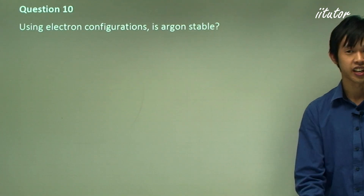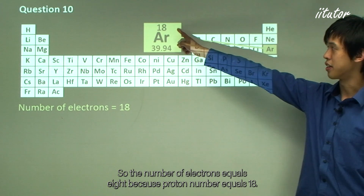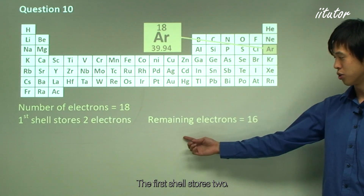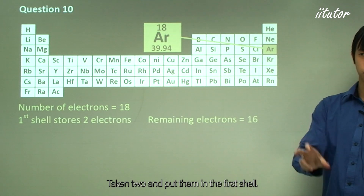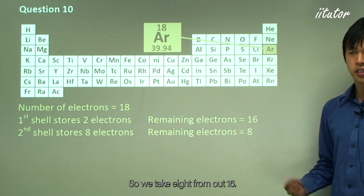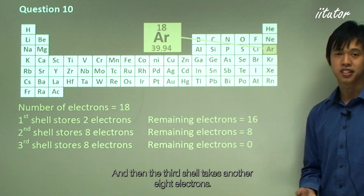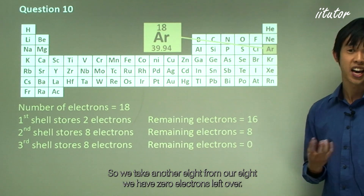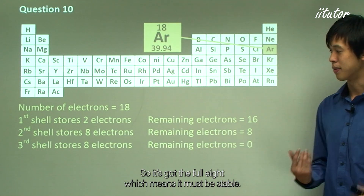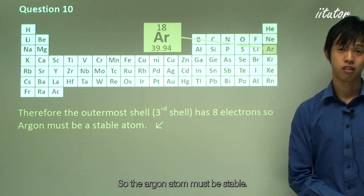Is argon stable? Argon has an atomic number of 18, so it has 18 electrons. The first shell stores 2, leaving 16. The second shell takes 8, leaving 8. The third shell takes another 8, leaving 0 electrons remaining. The third shell has the full 8 electrons, so the argon atom is stable.